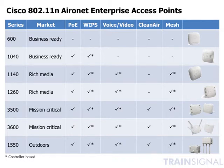The last access point we want to talk about is the 1550 series, designed for deployment outside. It comes in two models: one with internal antennas and another with external antennas. Because it is an outside access point, it also comes with different options for connecting to the network, supporting things like ethernet and fiber cable as different backhaul mechanisms. It also has a more robust housing.